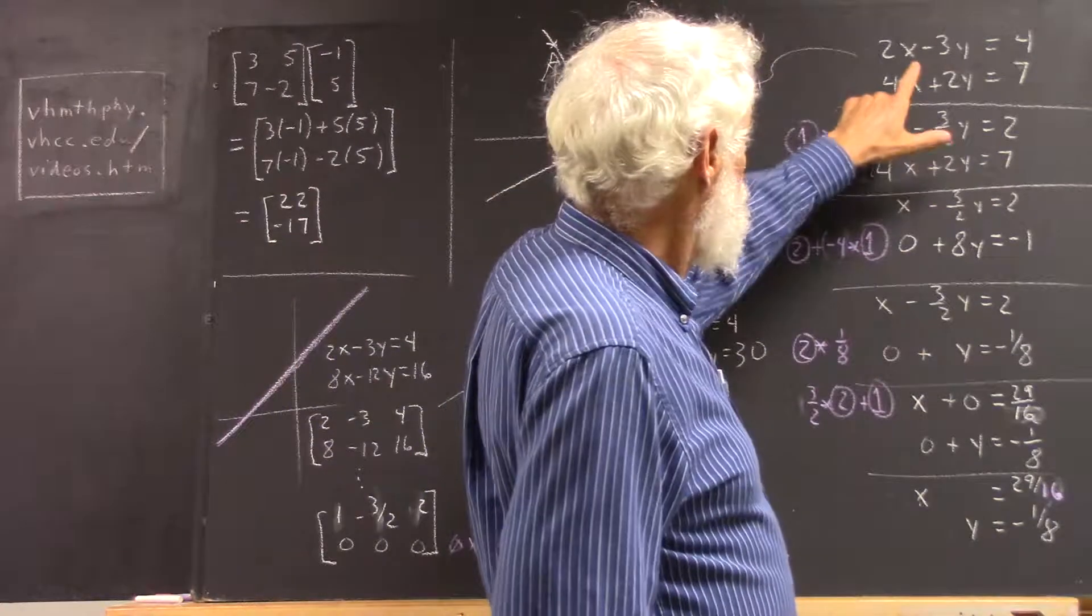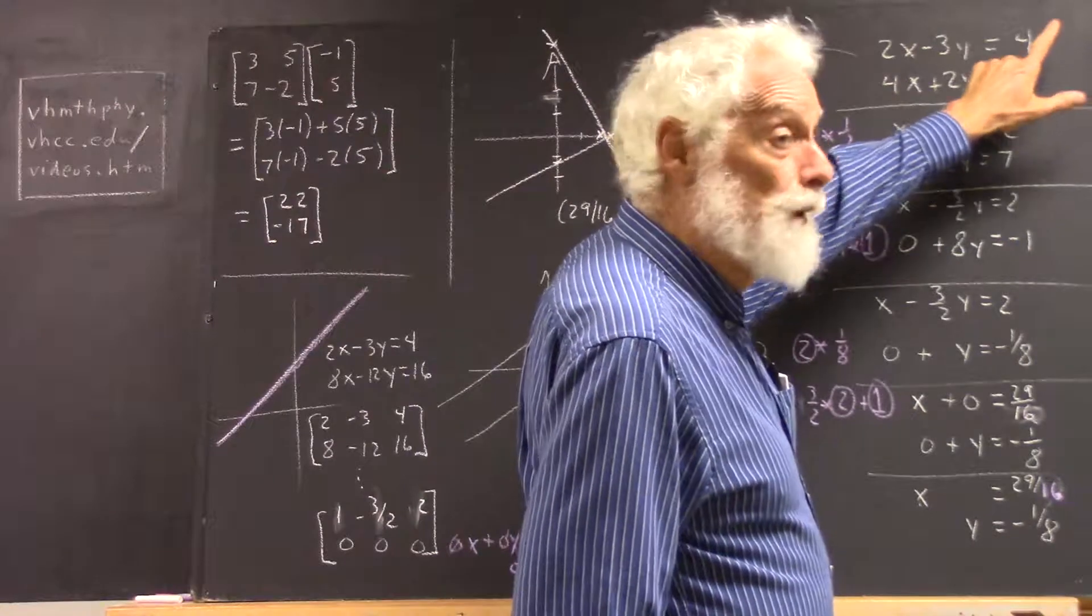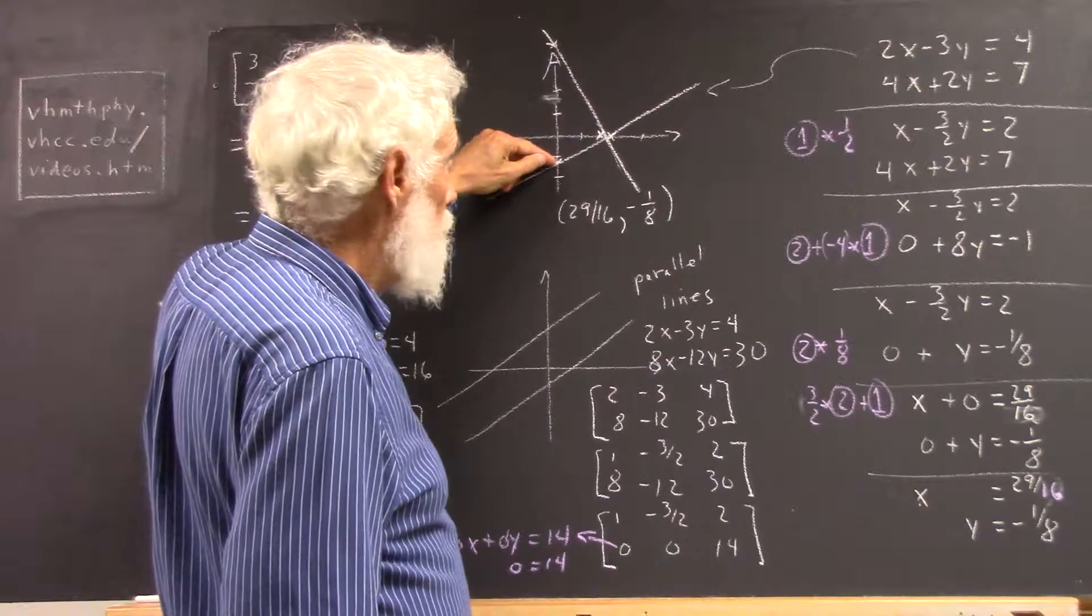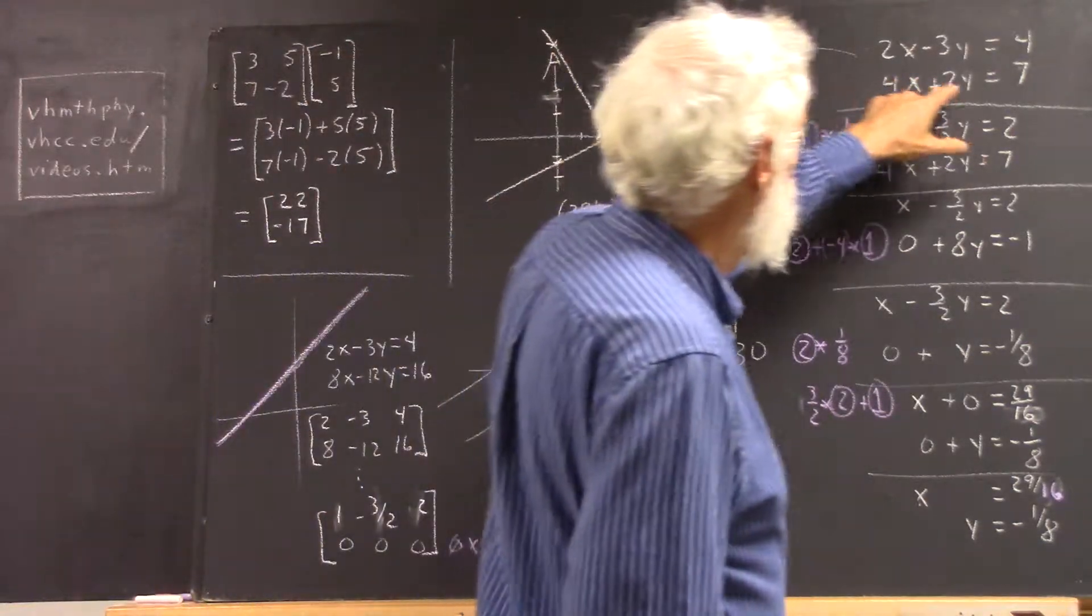Okay, well, if we let x equal 0, we find that y is negative 4 thirds. So we have a point where x is 0 and y is negative 4 thirds. That's this point. Now, we do the same for this equation.